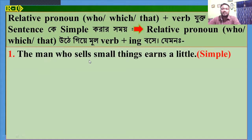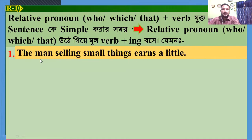Example 1: 'The man who sells small things earns a little.' Make it simple. Here, 'who' is the relative pronoun and 'sells' is the principal part. So, the answer will be: 'The man selling small things earns a little.'